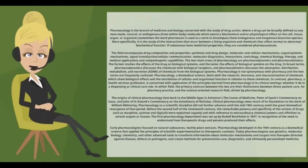Pharmacology as a scientific discipline did not further advance until the mid-19th century, amid the great biomedical resurgence of that period. Before the second half of the 19th century, the remarkable potency and specificity of drugs such as morphine, quinine, and digitalis were explained vaguely, with reference to extraordinary chemical powers and affinities to certain organs or tissues.